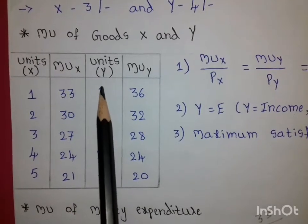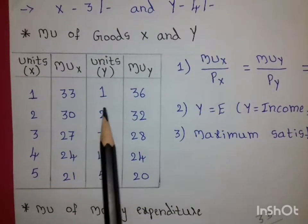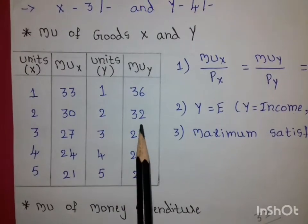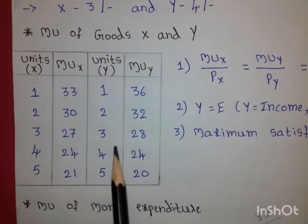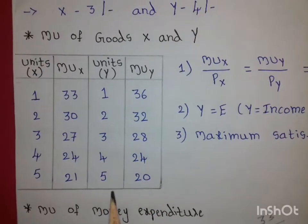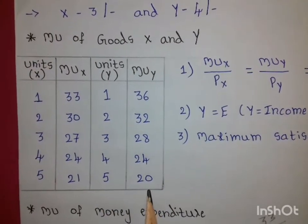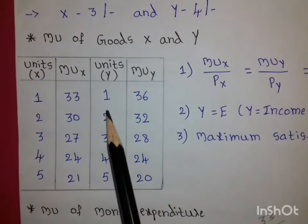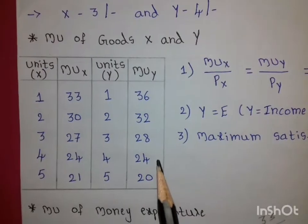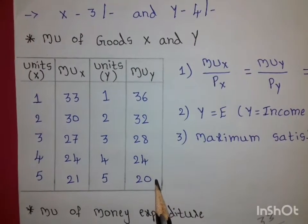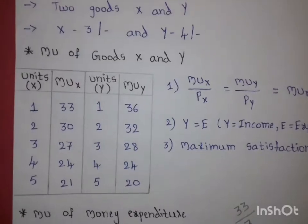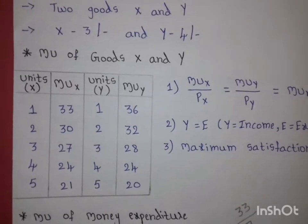For good Y: 1 unit gives marginal utility of 36, 2 units = 32, 3 units = 28, 4 units = 24, 5 units = 20. By repeatedly consuming one good, the satisfaction obtained from it decreases. In this way, marginal utility is not equal across units, so we need to buy multiple goods.